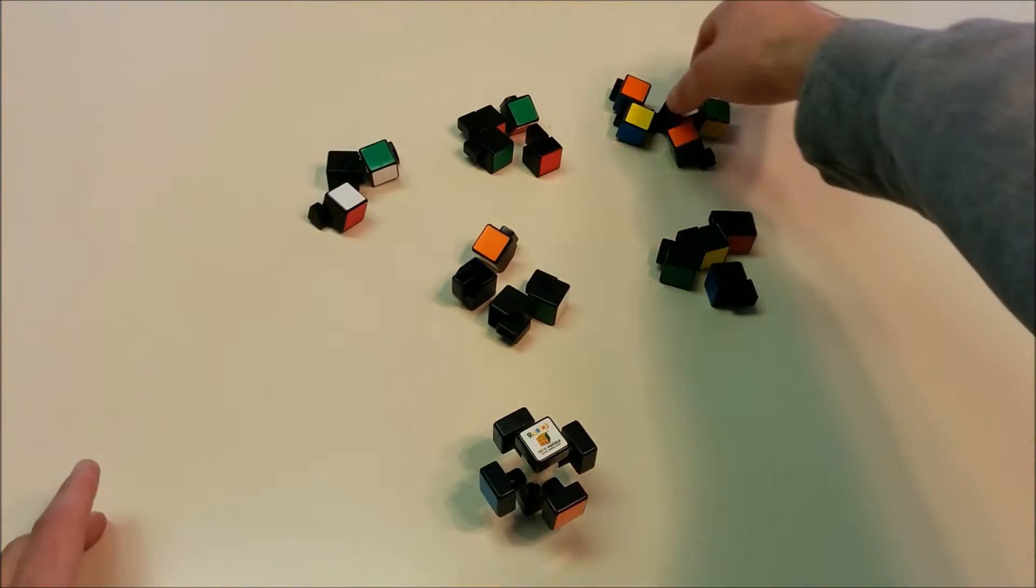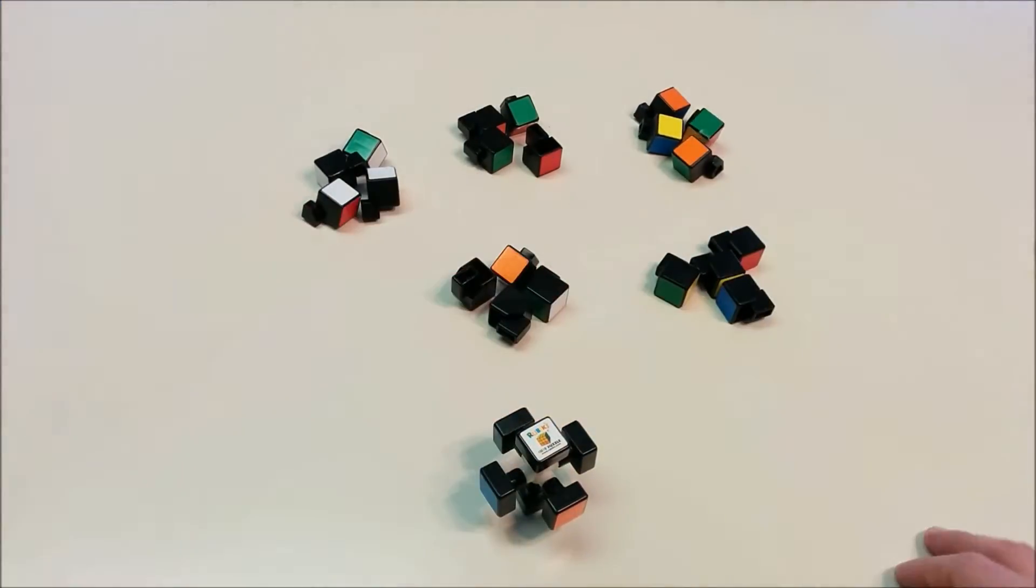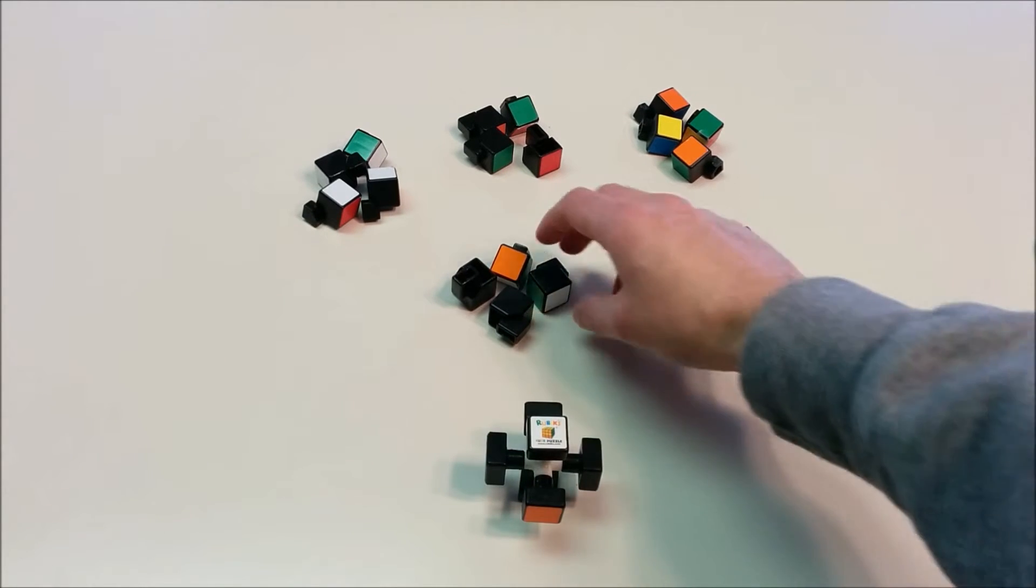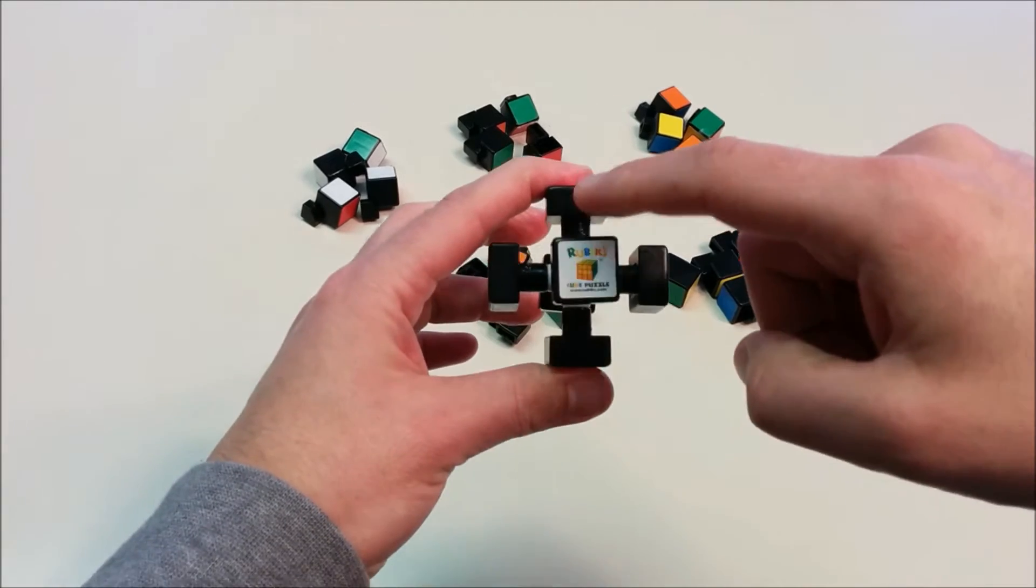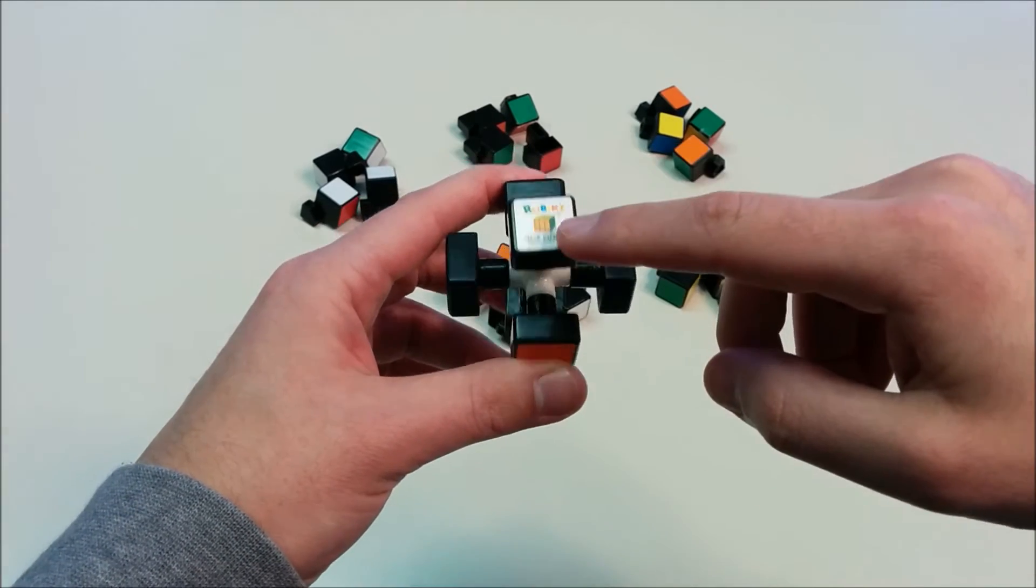So I've sorted the pieces into five piles that have four pieces each, and now we're going to explain how the layer method works to solve the puzzle. The first step is we're going to look at the white center, the white face, and we're going to make a cross.